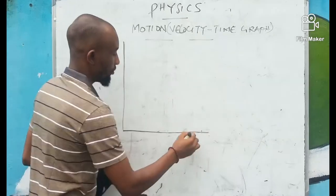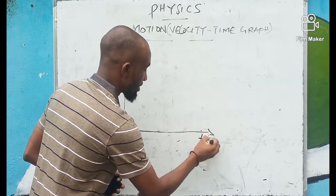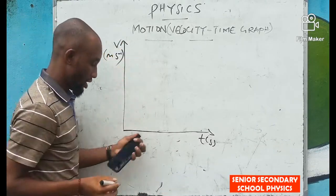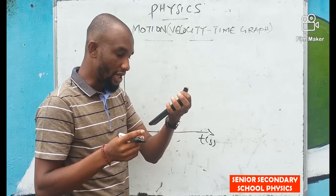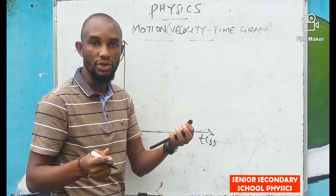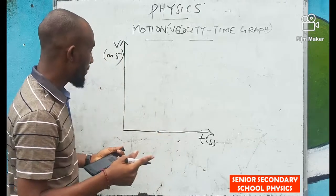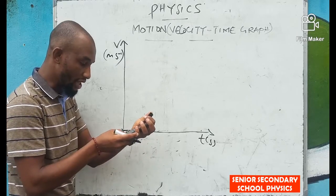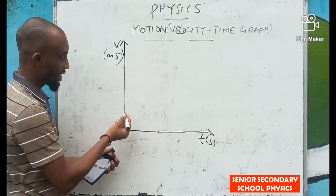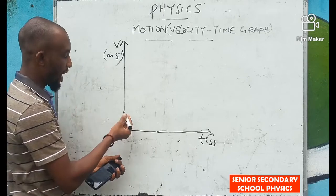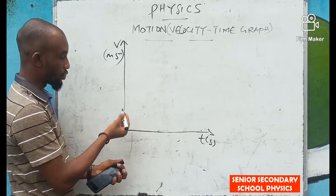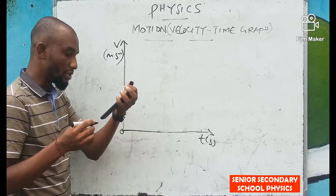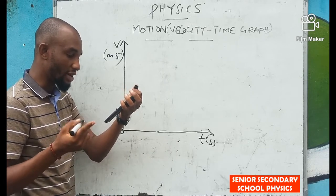On the sketch, the horizontal axis is time in seconds and the vertical axis is velocity in meters per second. From the question, the body starts with an initial velocity of 4 meters per second — remember, zero would be where the body starts at rest, but this body starts at 4 meters per second. So I place that point and label it 4.